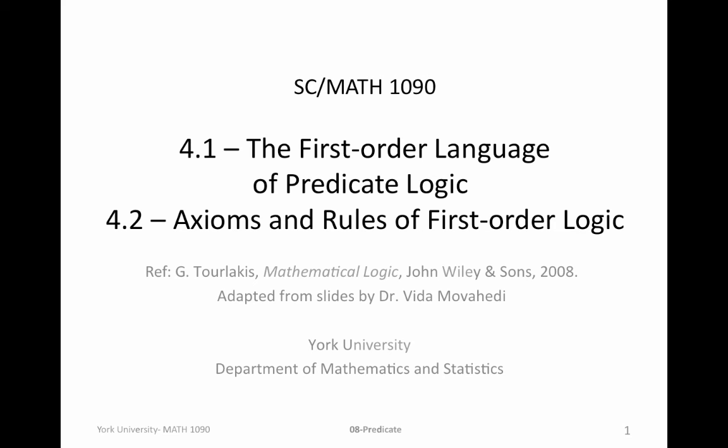The next sequence of videos will finish up section 4.1, where we're introducing the first-order language of predicate logic. In the last class we introduced the alphabet and how to construct well-formed formulas and their complexity. We'll talk about other definitions that we need, and then in 4.2 we'll talk about the axioms of predicate logic and the rules of inference of first-order or predicate logic.